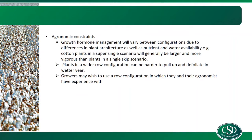Some of your agronomic constraints — growth hormone management — varies fairly significantly between the different row configurations as plant architecture does vary between configurations. For example, you'll typically get a much bigger plant in double skip and 2.4 metres than you will in a single skip or 60-inch scenario. Plants in wider row configurations can be harder to pull up and defoliate in wetter years, particularly those plants in 2.4 metres. There were a lot of crops along the Border Rivers east of Goondiwindi this year that really struggled to pull up, especially when they had plenty of nitrogen underneath. It also comes down to your own personal preference and your own experience between yourself and your agronomist.